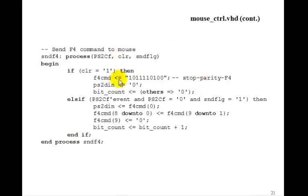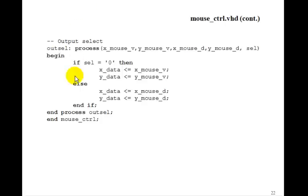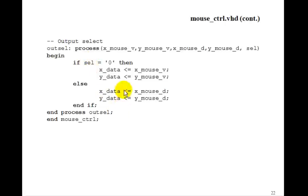Here's the process that sends the F4. We set it equal to F4, starting with the stop bit and parity bit because we're sending least significant bit first. We actually send out 10 bits. That's how we send out that F4 in the send byte command. There's also an out_select process with x_mouse and y_mouse velocity, x_mouse and y_mouse distance, and a select line. If the select line is 0, the output contains velocity data; if select is 1, it gives distance data — an input you can set to whichever you want.